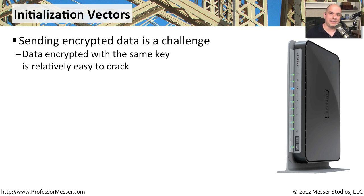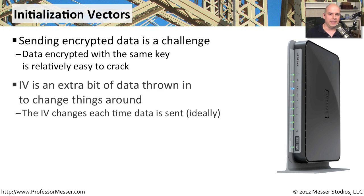If it's in the clear, they can see everything. If it's encrypted data, they have to do a little bit of extra work to try to decrypt that data and see what's inside. In 802.11 WEP, there's this concept of an initialization value. This IV is a bit of data that's put onto the packet itself.